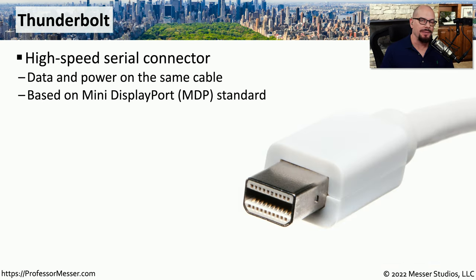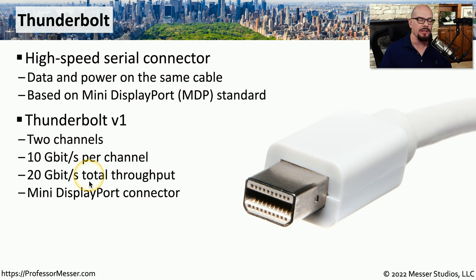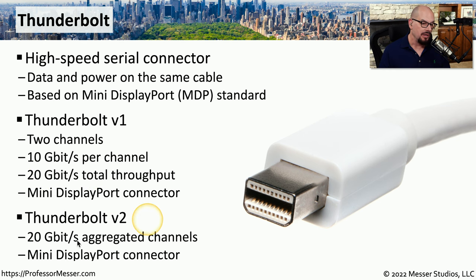Another common peripheral connection type is Thunderbolt — a high-speed serial connection able to carry data and power on the same cable. Early versions of Thunderbolt use a mini DisplayPort as the physical connection type. Thunderbolt version 1 is a two-channel technology supporting 10 gigabits per second over each channel for a maximum throughput of 20 gigabits per second. Thunderbolt version 2 aggregates those channels together, also giving a total throughput of 20 gigabits per second.